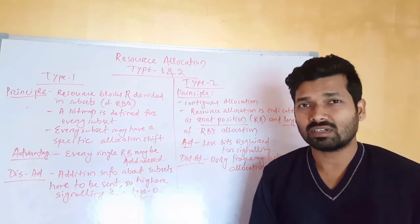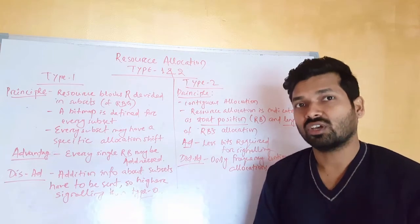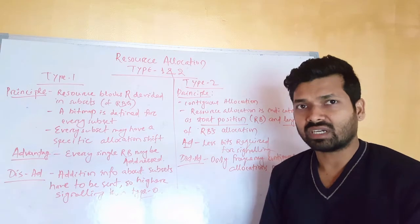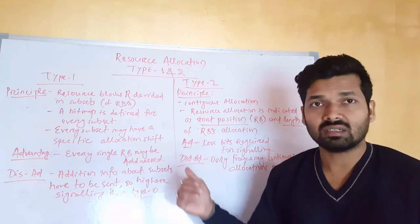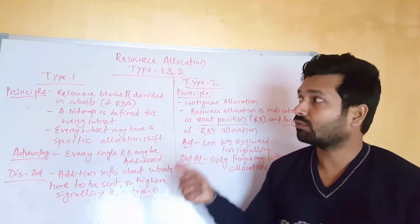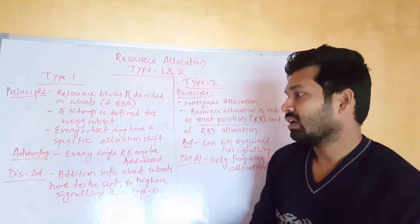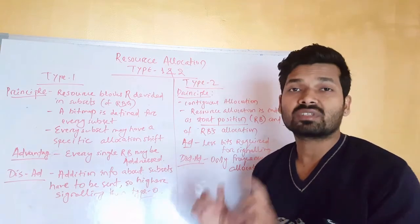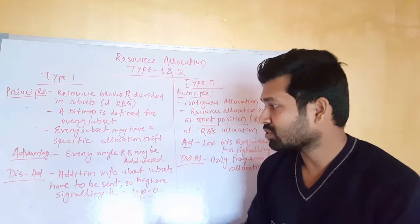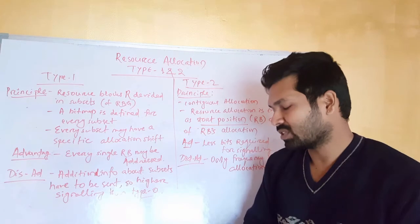The advantage of type 1 is that every single resource block may be addressed, so you have more utilization compared to type 0 and better spectral efficiency. The disadvantage of resource allocation type 1 is that additional information about subsets has to be sent.